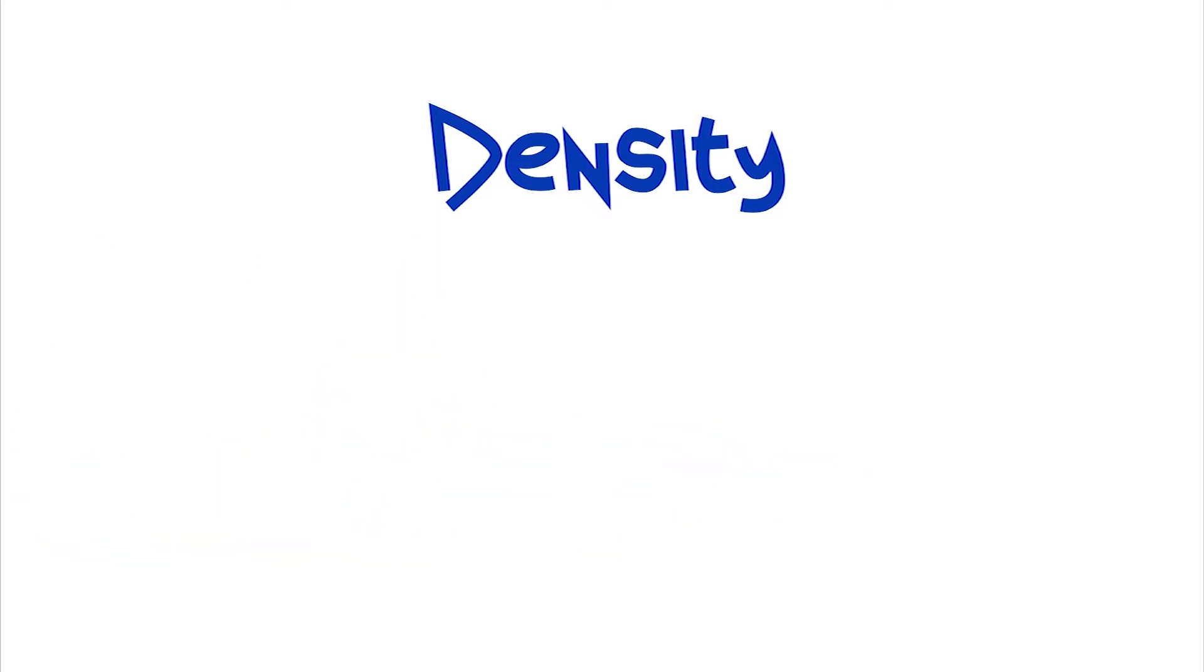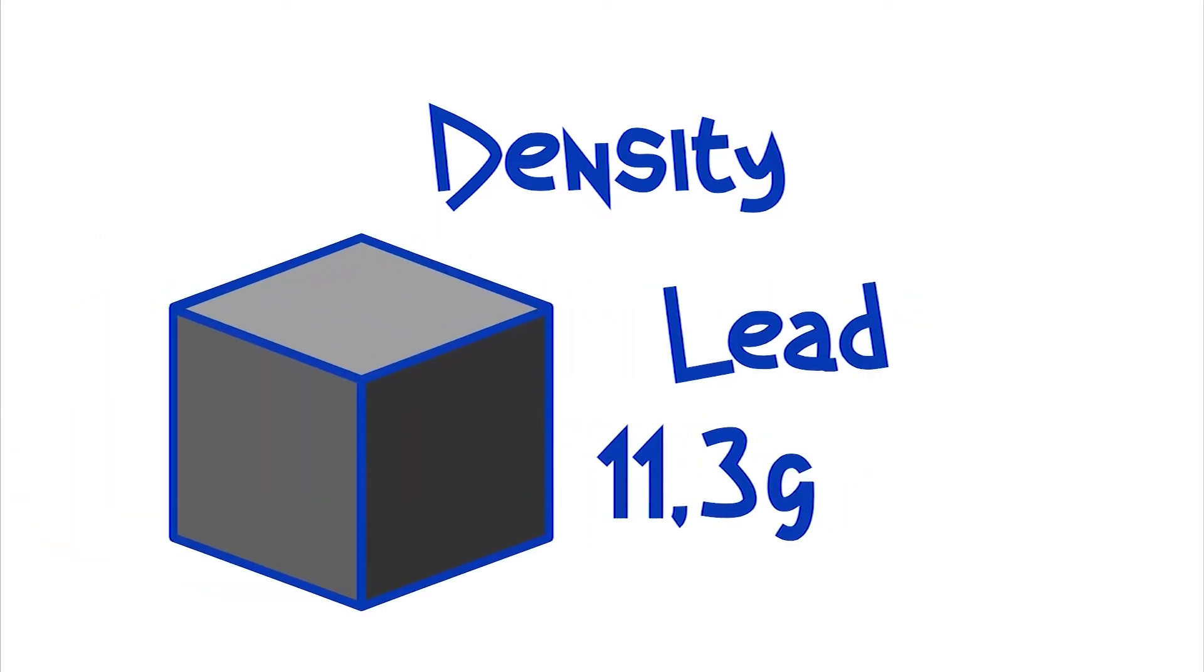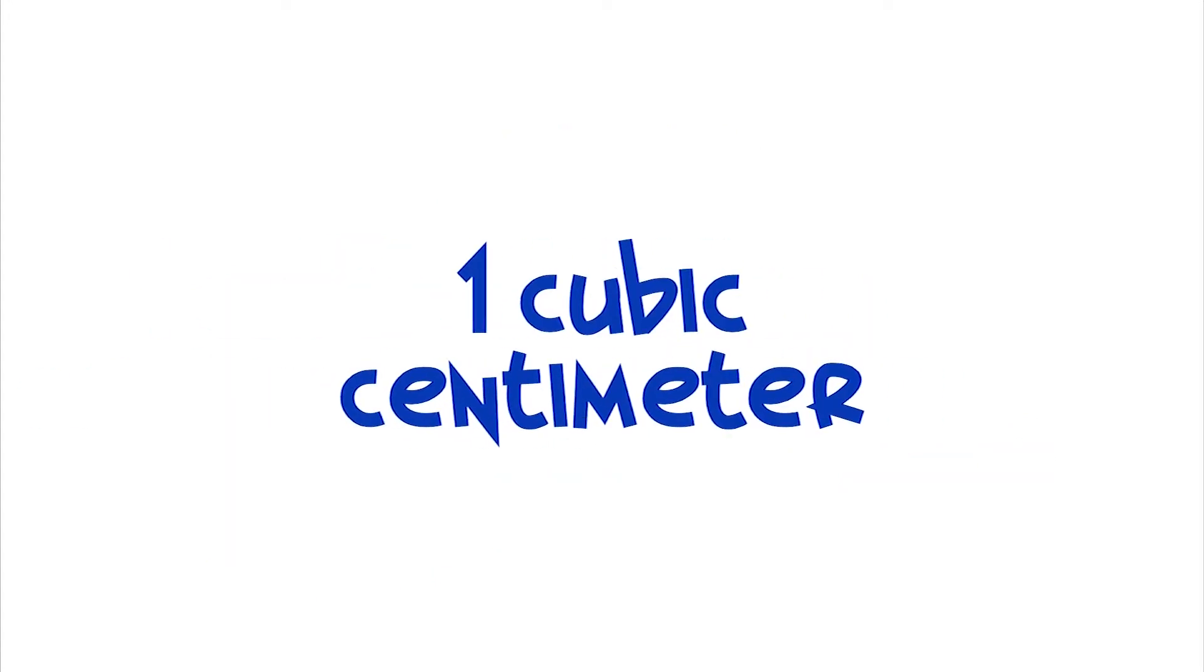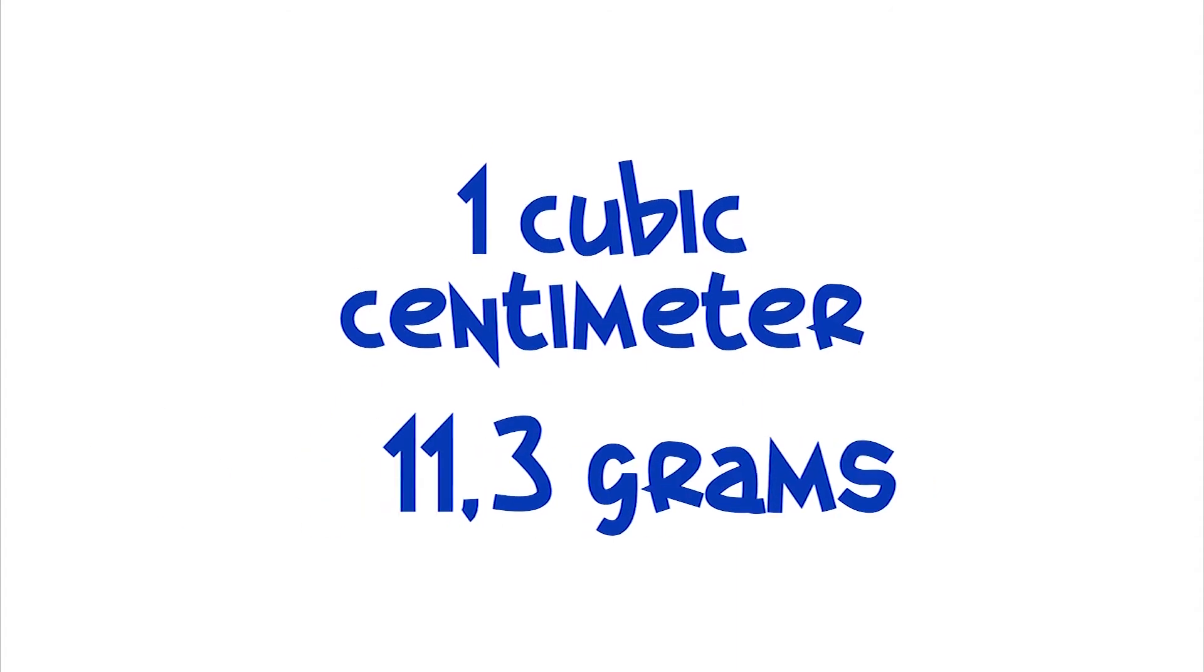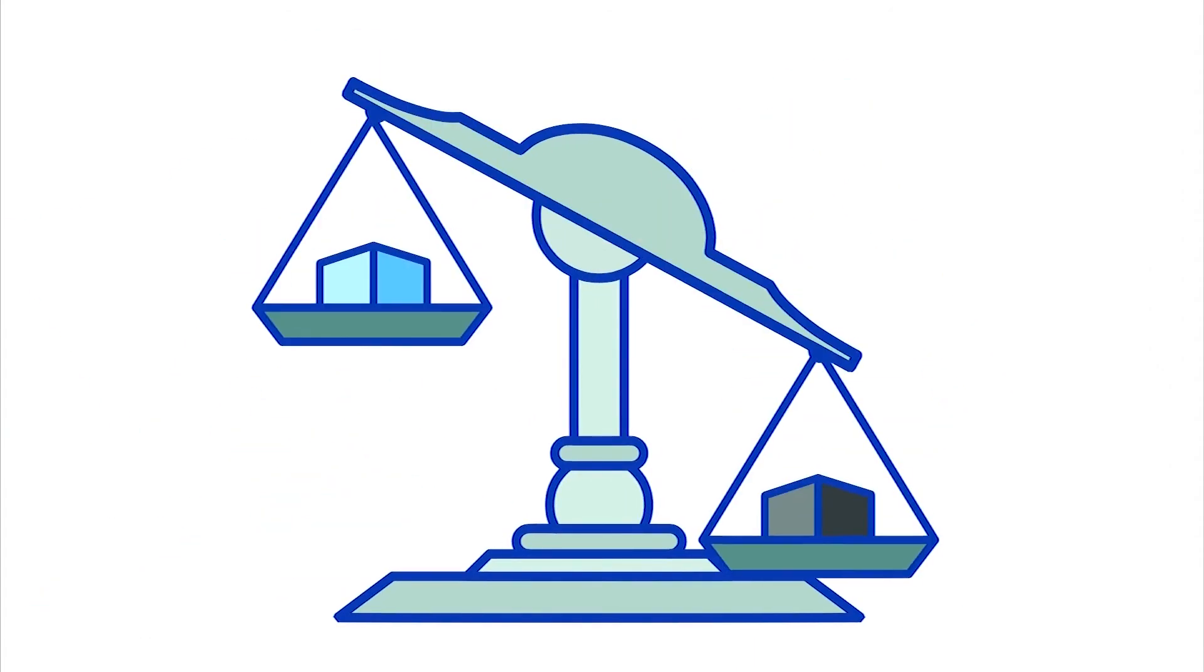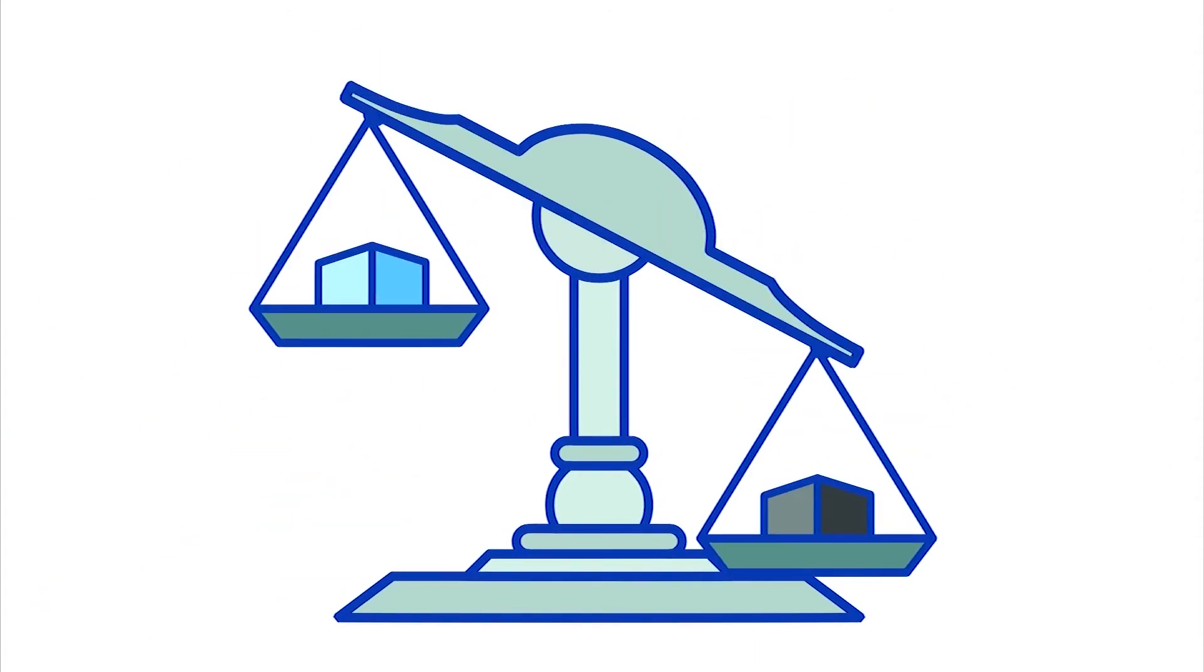Yet the density of the lead is 11.3 grams per cubic centimeter. So, within a cubic centimeter, there are more than 11 grams of lead. Whoa! Lead is much denser than water.